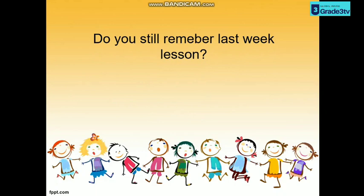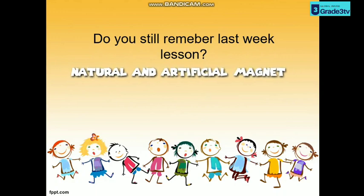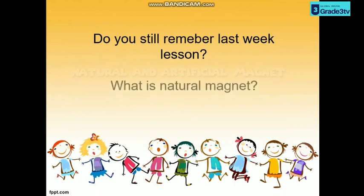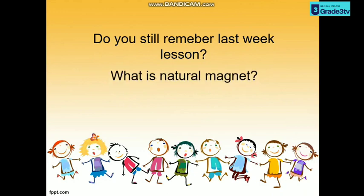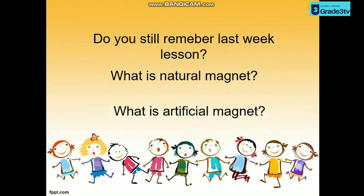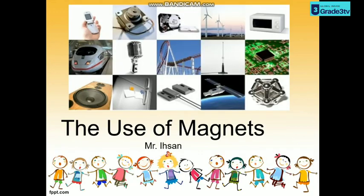Very good! Last week we learned about natural magnets and artificial magnets. What is a natural magnet? A natural magnet is the magnet that occurs naturally in nature. Very good! How about artificial magnets? An artificial magnet is the magnet that is made by people. Very good!